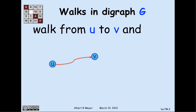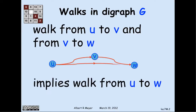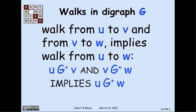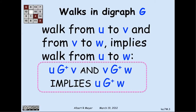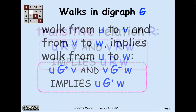If we think about walks in a digraph, the basic property of walks is that if you have a walk from u to v and a walk from v to w, then you put the two walks together and you wind up with a walk from u to w. Expressed in terms of the positive walk relation in G, this is saying that if u G-plus v and v G-plus w, then u G-plus w. That abstract property, highlighted with the magenta box, when you apply it to an arbitrary relation is called the transitivity property.